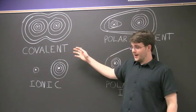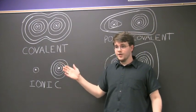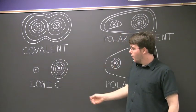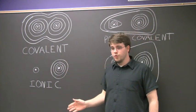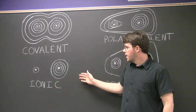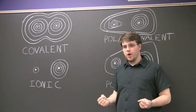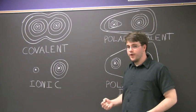Covalent does just what it sounds, it shares electrons between the nuclei of two atoms. While ionic, generally due to polarity or charge, one nucleus will generally pull an electron away from the nucleus of another atom.